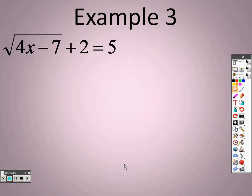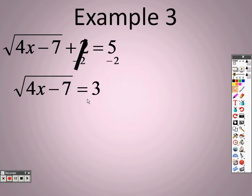So, with example 3, what we're going to do here is, I need to get x all by itself, so let's get rid of this number that's hanging out here all by itself first. So, since it's plus 2, I will subtract 2 on both sides. And by doing that, I have the square root of 4x minus 7 equals 3.